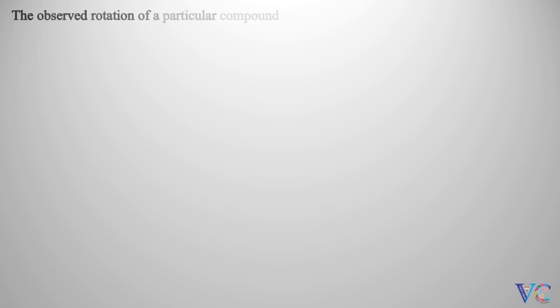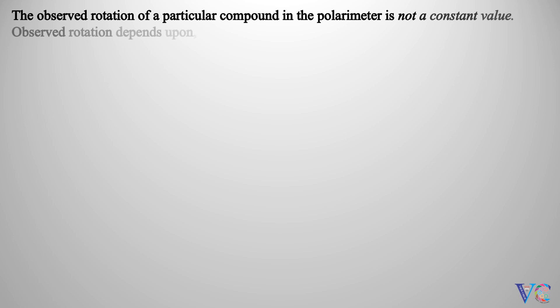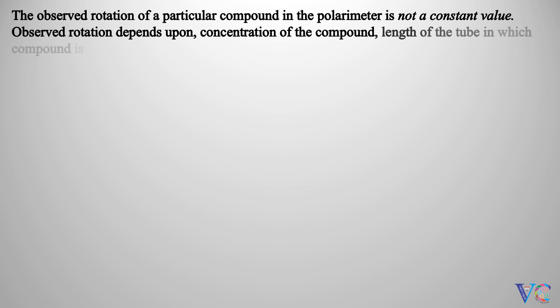The observed rotation of a particular compound in the polarimeter is not a constant value. Observed rotation depends upon the concentration of the compound, the length of the tube in which the compound is placed, temperature, solvent, and wavelength of the light.